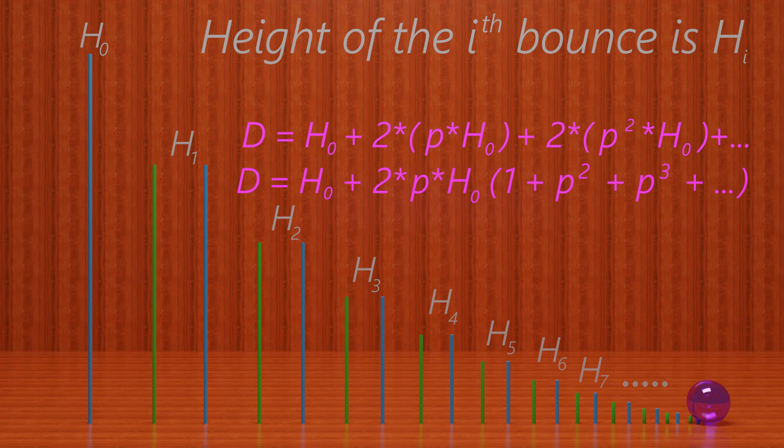We know that 1 plus p plus p squared and so on is equal to 1 over 1 minus p. This is a geometric series, and p is less than 1.